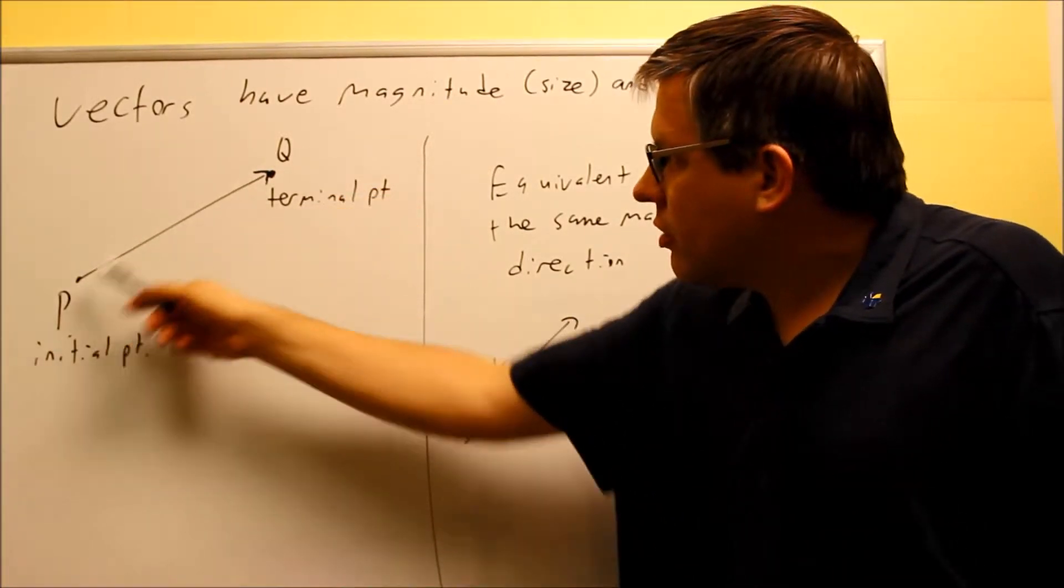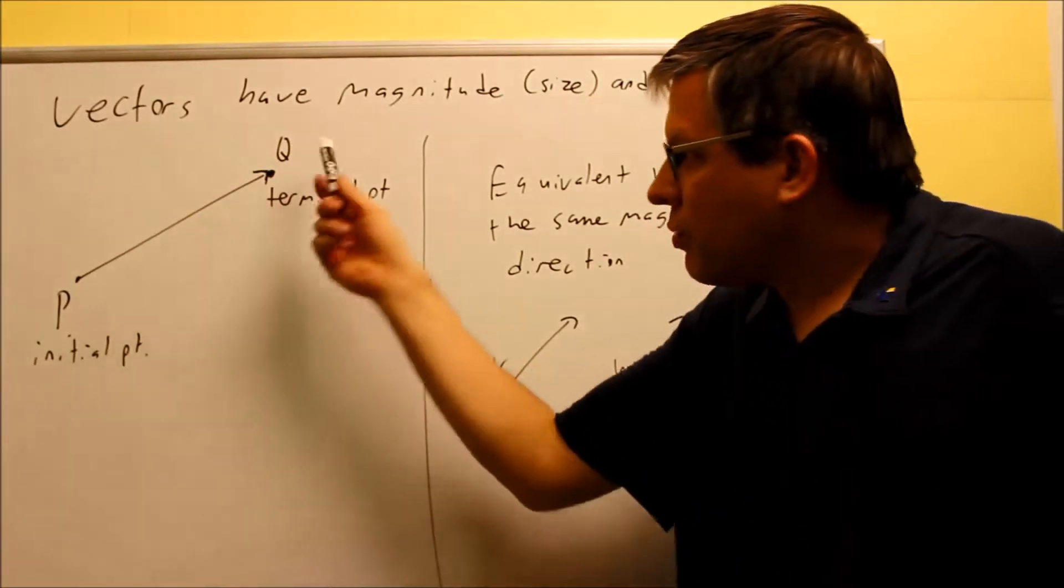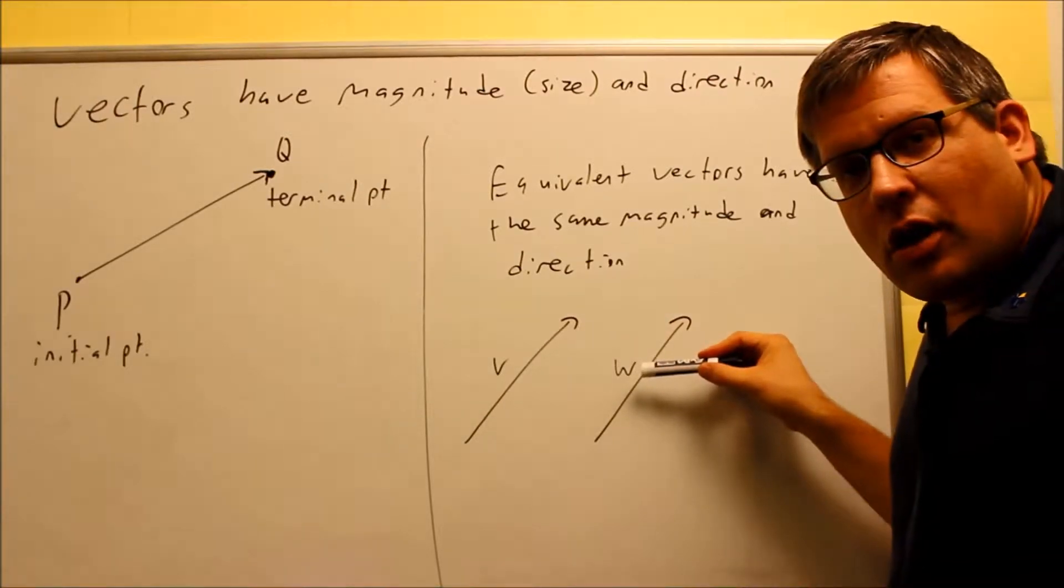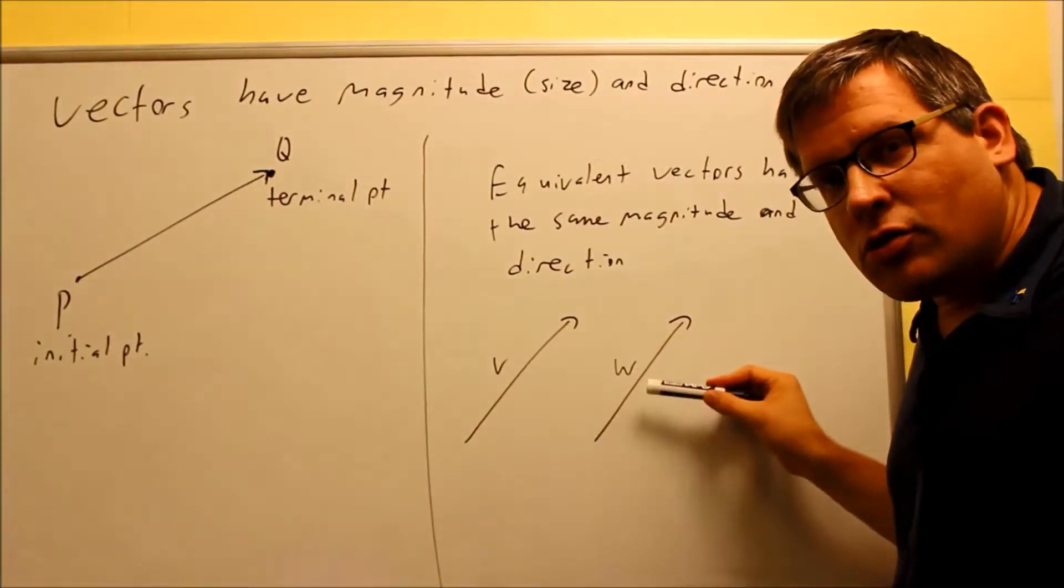You could label vectors with letters like this with P and Q, or you could label vectors this way, where you just simply put a letter next to it, like vector V and vector W.